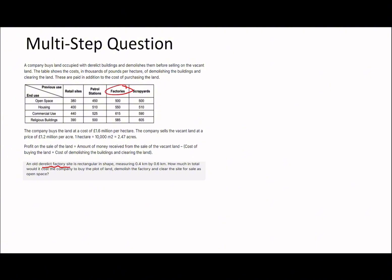So for the next question: an old derelict factory site, rectangular in shape, measuring 0.4 kilometres by 0.6 kilometres. How much in total would it cost the company to buy the plot of land, demolish the factory and clear the site? It says for open space use, so we know which row of the table to use.